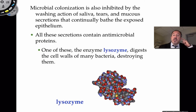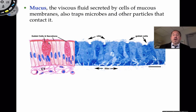In our saliva and tears, cells produce an enzyme called lysozyme. The prefix 'lyso' or 'lysis' means to destroy, so this is an antiseptic enzyme that destroys bacterial cell walls. It's present in our saliva and tears and helps to destroy pathogenic bacteria on the skin. The mucus secreted by goblet cells traps microbes, and then the cilia move them out of the respiratory system.